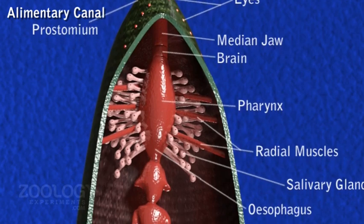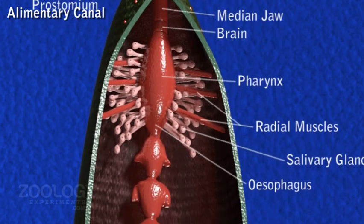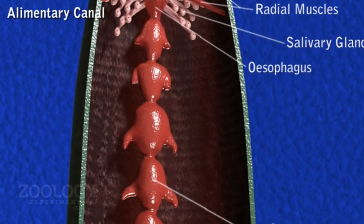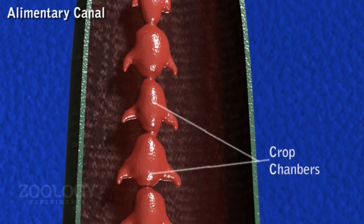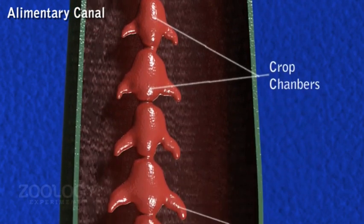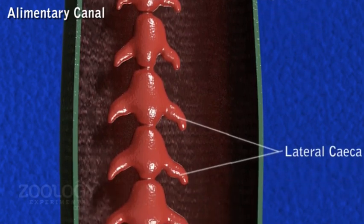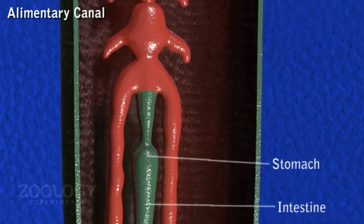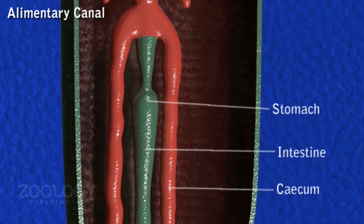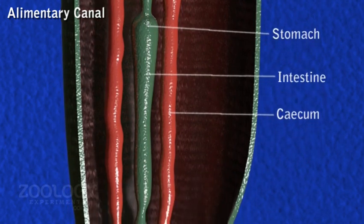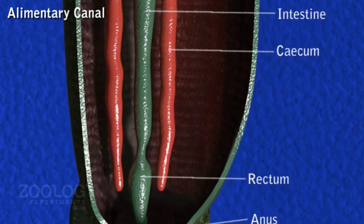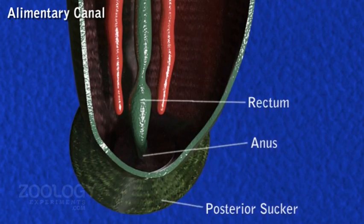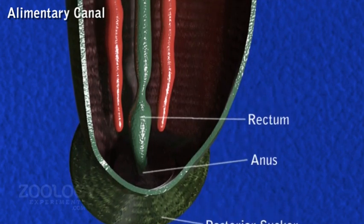The alimentary canal of leech is a complete straight tube with different diameter, from mouth to anus. It is differentiated into buccal cavity, pharynx, esophagus, crop, stomach, intestine and rectum. The greater part of the alimentary canal is the crop, concerned with storage of uncoagulated ingested blood, while only a small portion is concerned with digestion and absorption. This adaptation is in accordance with the sanguivorous habit of leech.